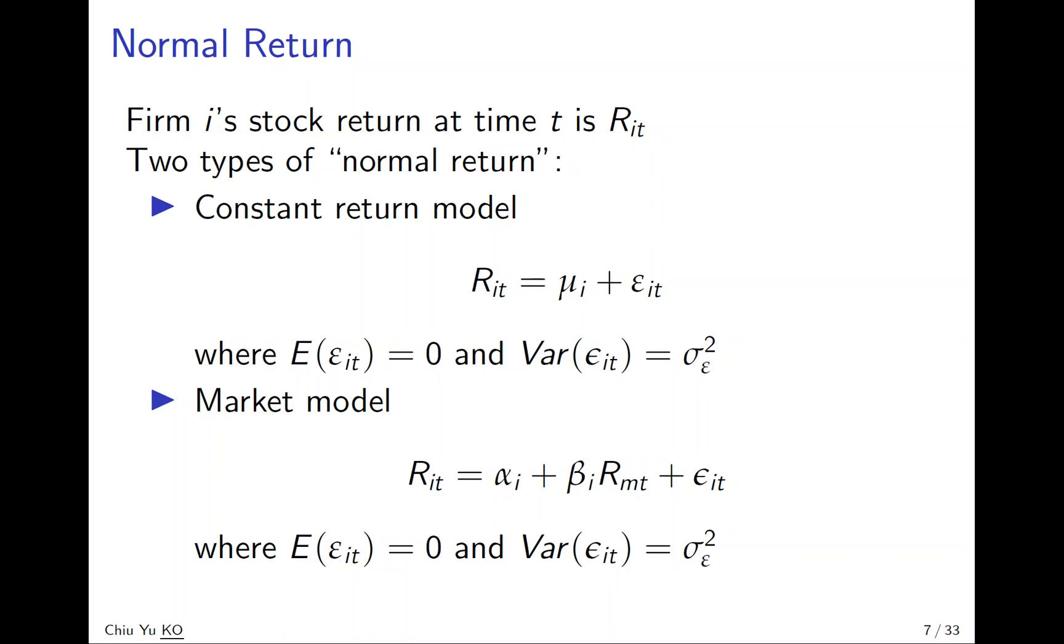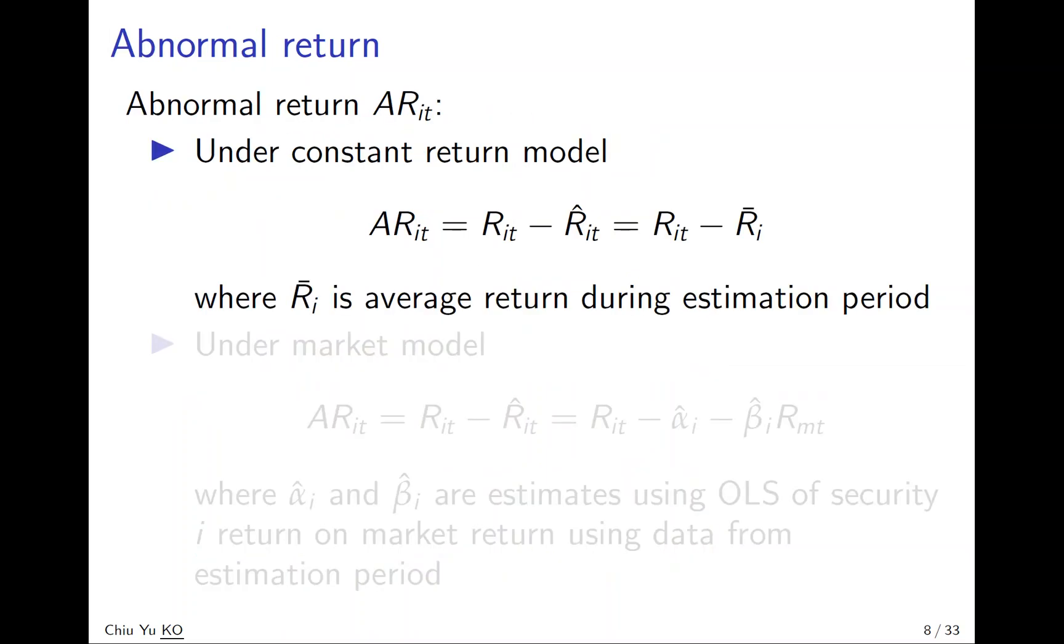We have two methods to calculate normal return. The abnormal return is the actual return minus the normal return. Under the constant return model, AR_it is actual return R_it minus the estimated return, which is the average return R_bar.